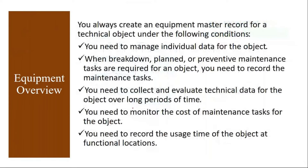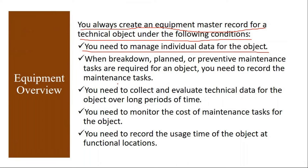In the equipment master, you can maintain warranty information, to which customer you have sold that product, and its serial number - all things you cannot maintain in the material master. You always create an equipment master record for a technical object under these conditions: you need to manage individual data for the object - its serial number, warranty, which maintenance plant and planning plant is responsible, who is the planner group responsible.